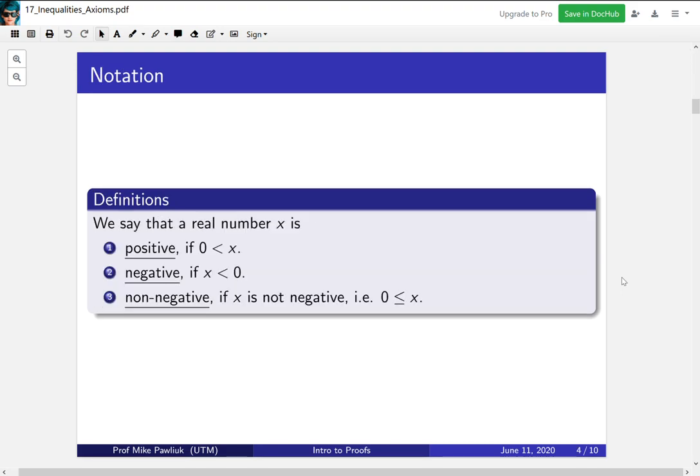Before we start, a bit of notation. This is somewhat simple, but it's often not defined and leads to confusion. So let's define them right now. We will say that a real number x is positive if x is greater than zero, negative if x is strictly less than zero, and non-negative if it's not negative. In other words, x is greater or equal to zero.